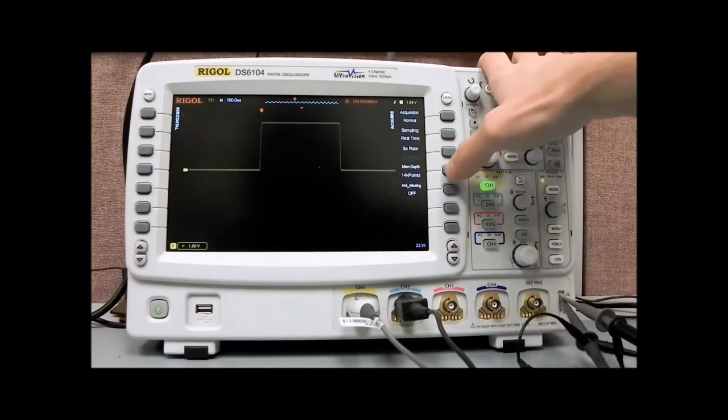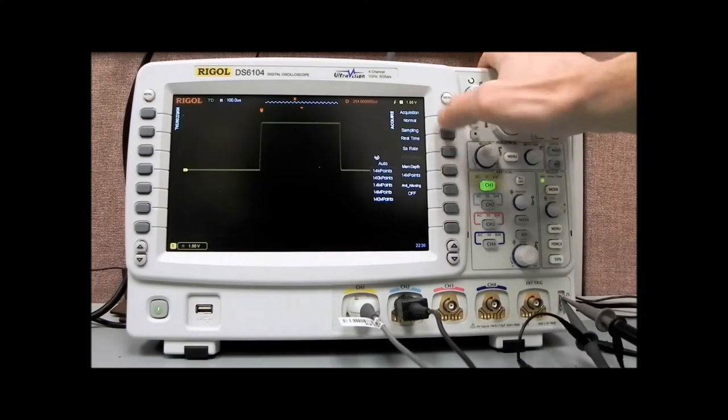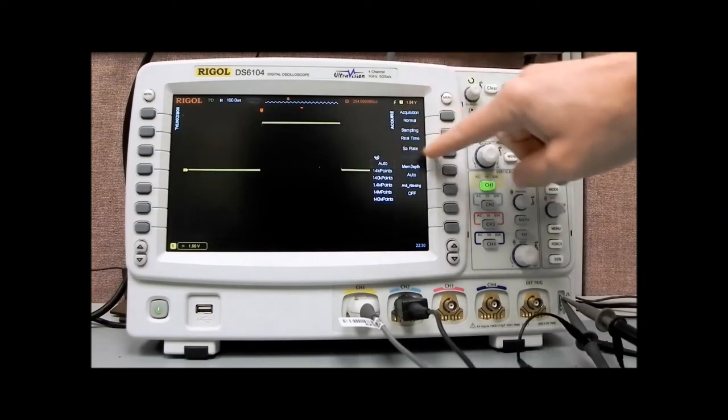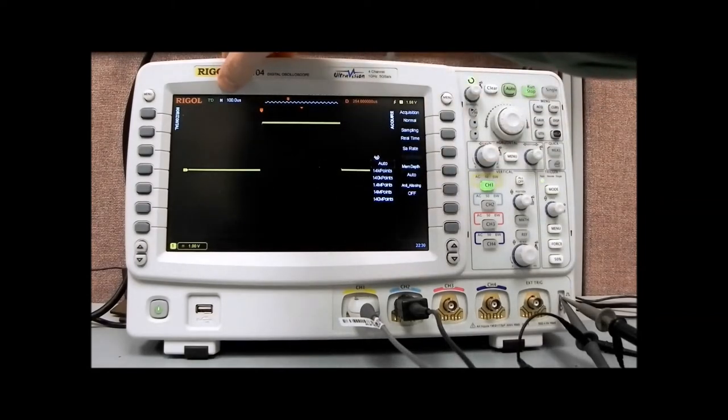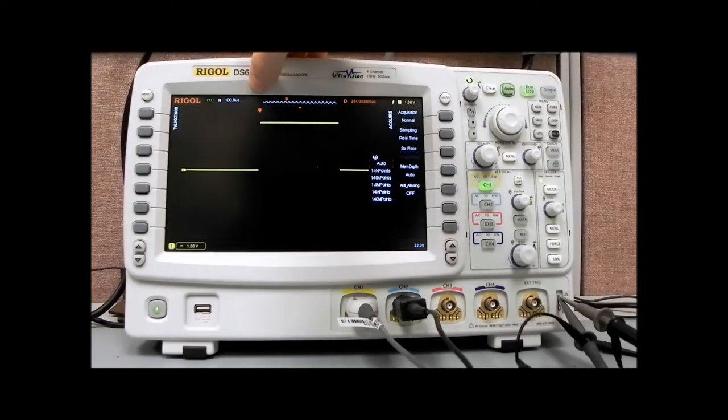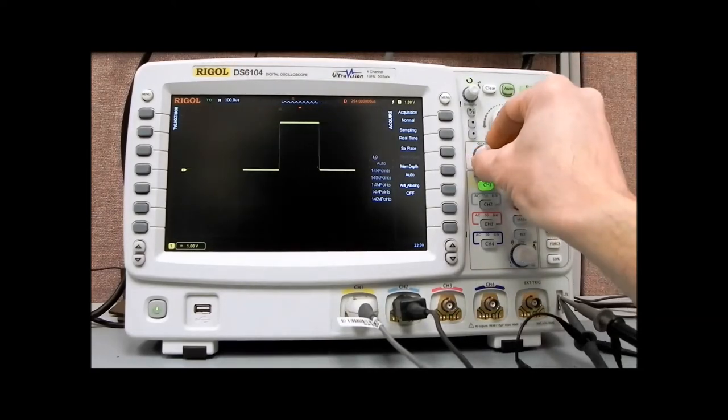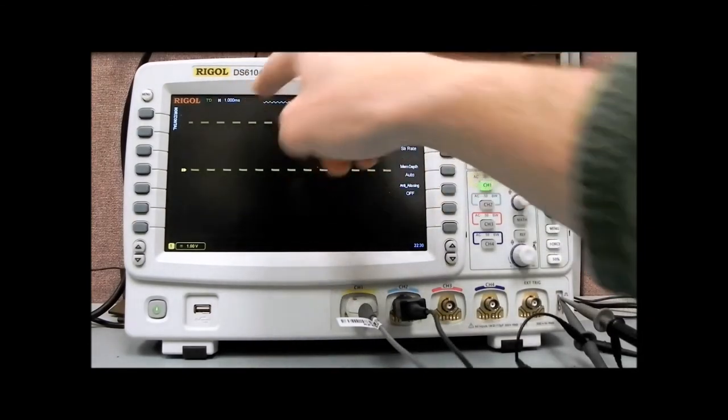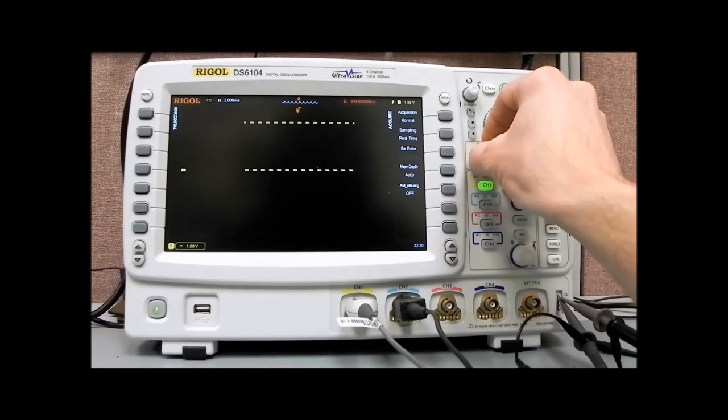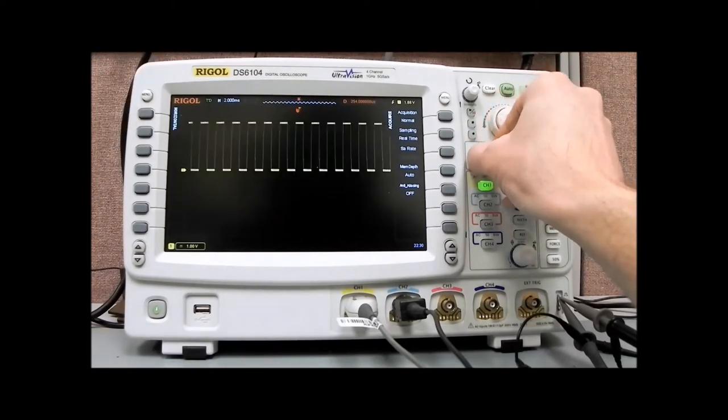If you press the acquire key, you can go to the memory depth. Most of the time the scope's going to be set in auto. In auto, it's going to automatically decide the best sample rate as well as the best number of data points for that particular horizontal time frame. Right now we're on 100 microseconds per division time scale, collecting 5 gigasamples per second rate at 7 million points. If we go to 1 millisecond per time division, now we've gone up to 70 million points, then 140 million on 5 milliseconds.